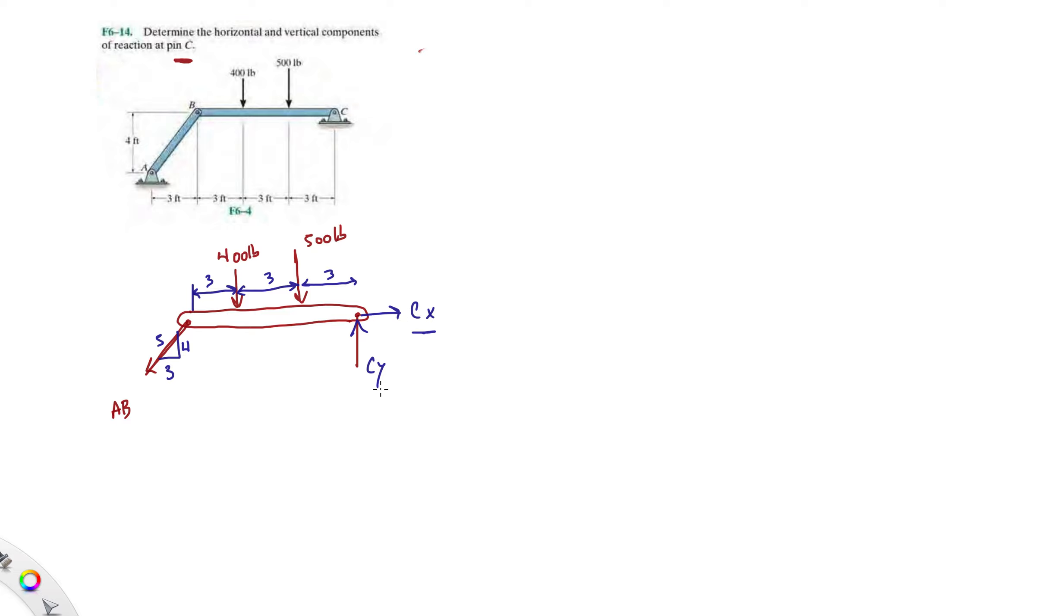Luckily for us they gave us a 3-4-5 triangle, so that's going to make your math a lot easier. Then let's just say CY and CX - you're guessing these directions, you don't know yet. From here I have three unknowns. One quick way to eliminate two unknowns is taking a moment at C.